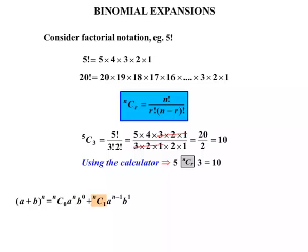So we had n choose 1. Our next one will be n choose 2, a to the n minus 2, and b squared. Now that will continue on. Towards the end, n choose n minus 1, a to the 1, and b to the n minus 1. Our final term would be n choose n, a to the 0, b to the n.